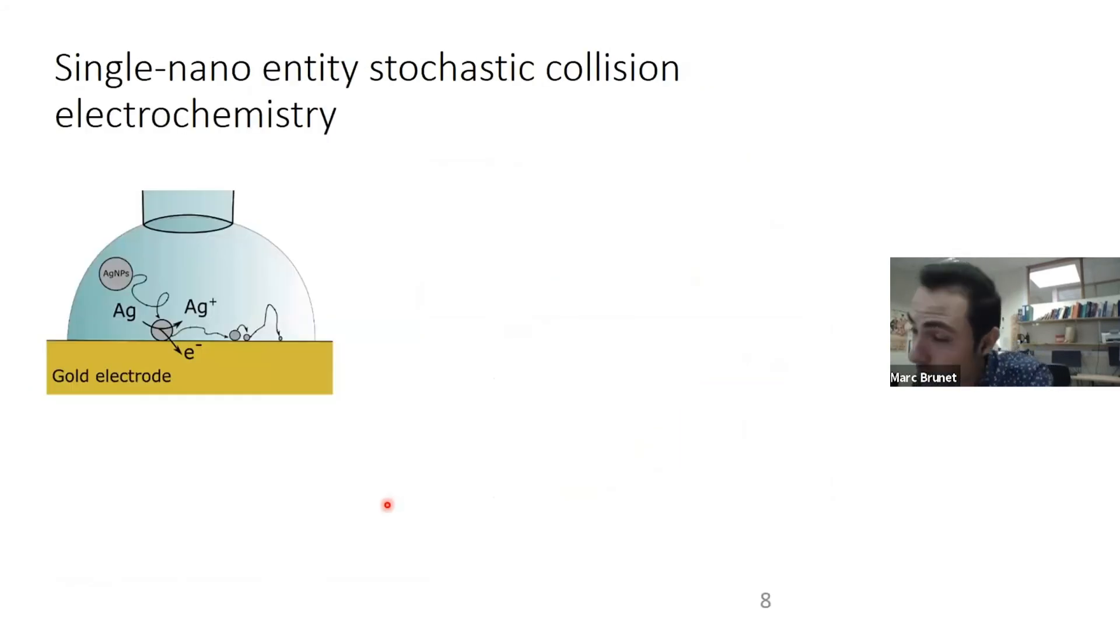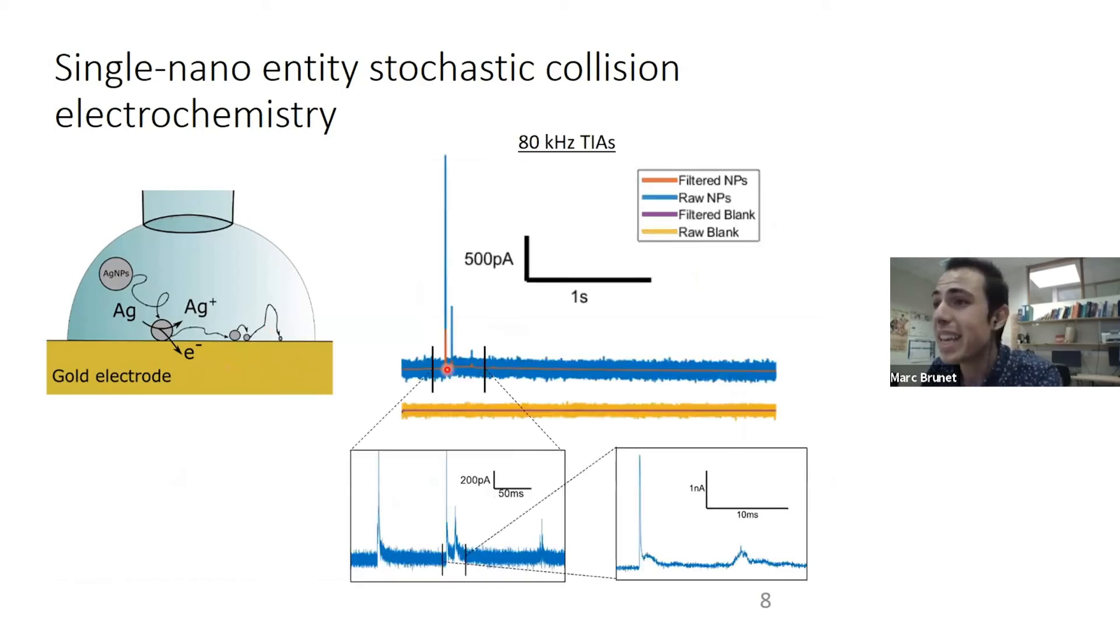Finally, going into the proper electrochemistry, we were able to perform single nanoentity measurements with the setup using 100 nanometer nanoparticles when the electrode was held at one volt. Here is a current trace done with an 80 kilohertz current amplifier. We can clearly see multiple oxidation from the nanoparticle colliding several times with the electrode. When we integrate the charge produced by all those peaks by one of those events, we obtain a similar charge to what is expected from oxidizing the silver to silver plus.